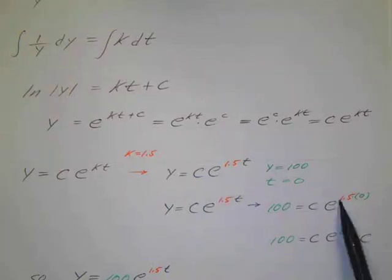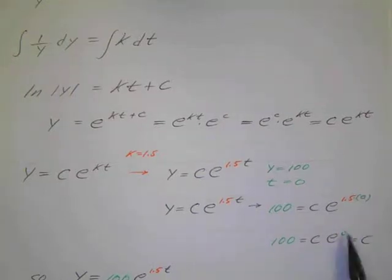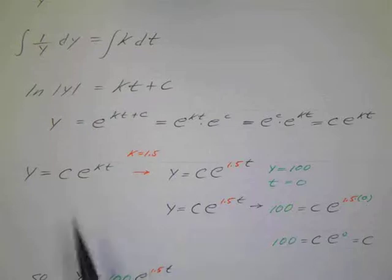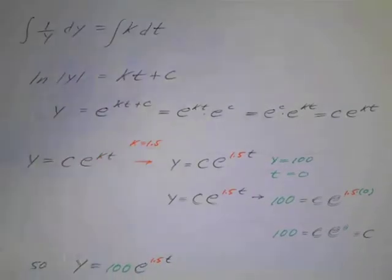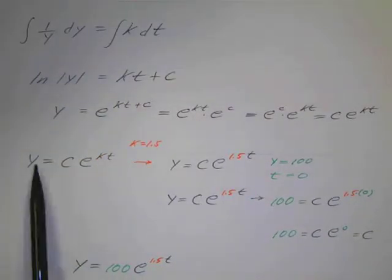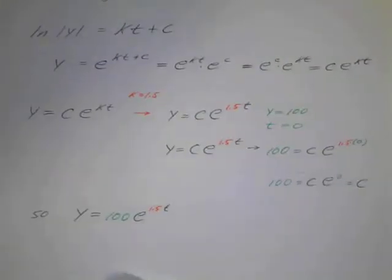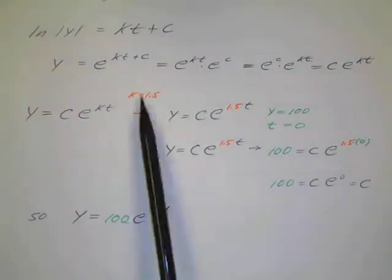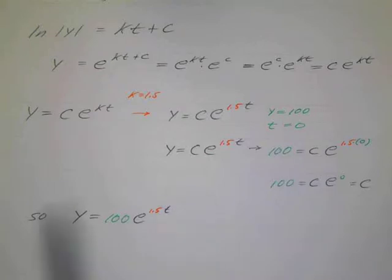Well, 1.5 times 0 is just 0, so I have e to the 0, which is just 1. So 100 equals c times 1, which is c. So c equals 100. So you can go back and put that in the initial, or back up here in this equation here. y equals c times e to the kt. So y equals c was 100, and we were given that k was 1.5, so there's your final equation. y equals 100 e to the 1.5t.